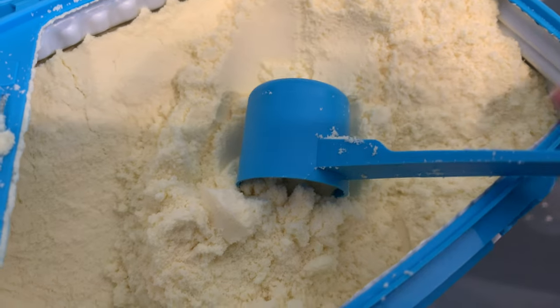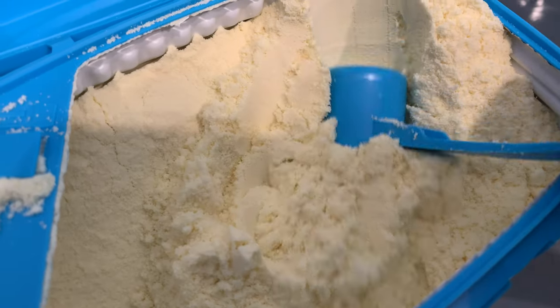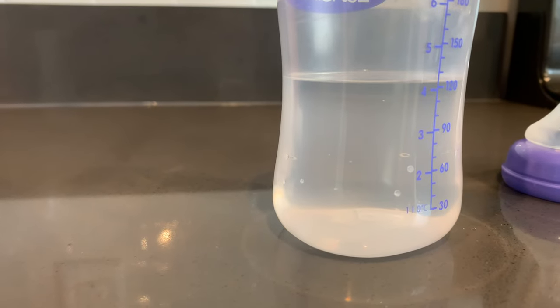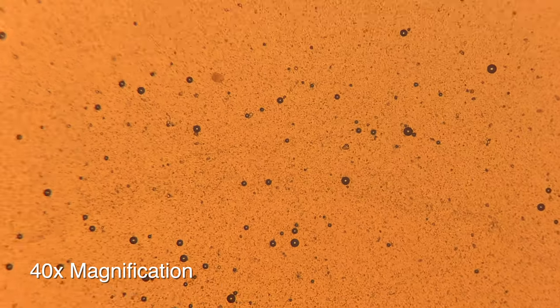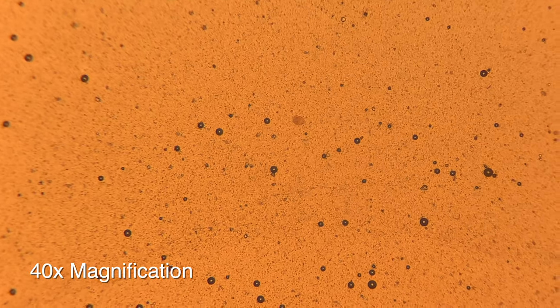Alright, enough talk about mammals. I've got some infant formula here that I wanted to compare against the human breast milk. So here's the infant formula. All of those larger circles that you're seeing are the air bubbles, and the smaller ones are actually fat globules.